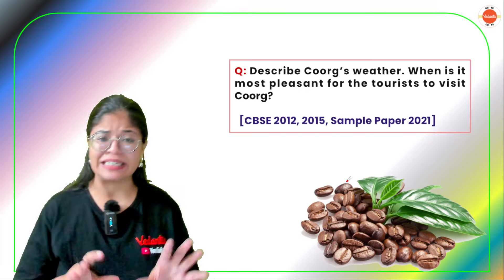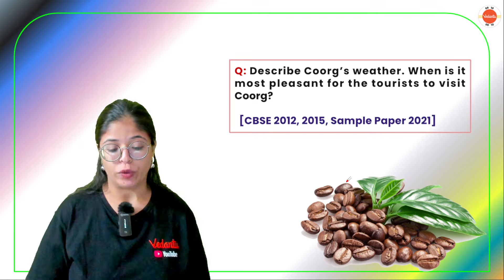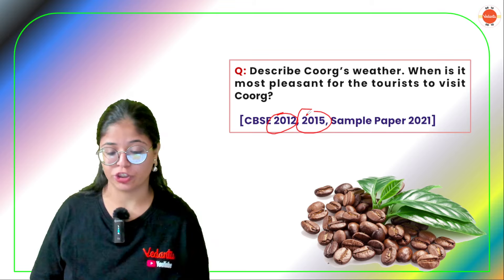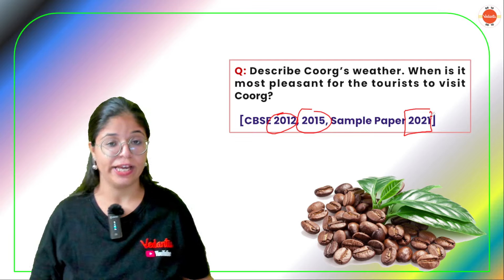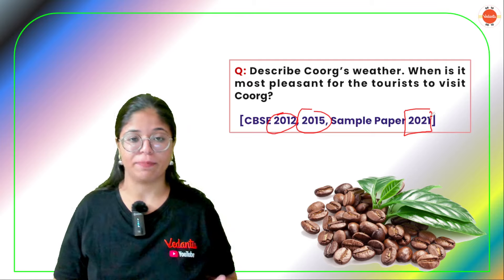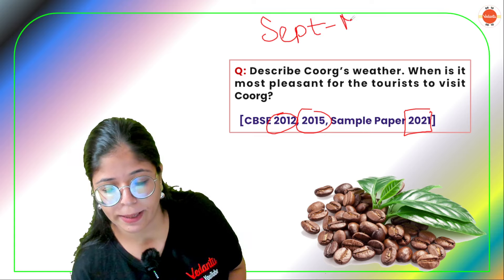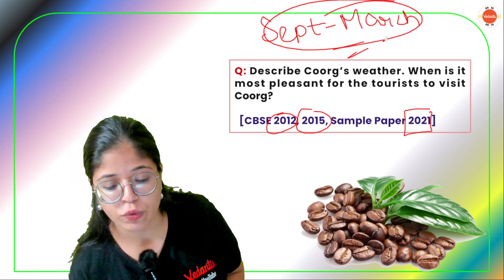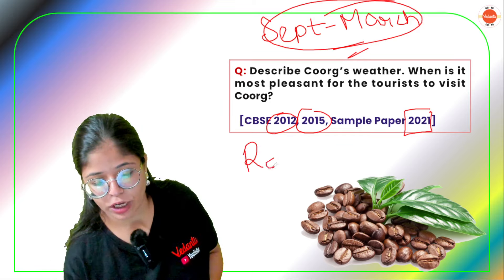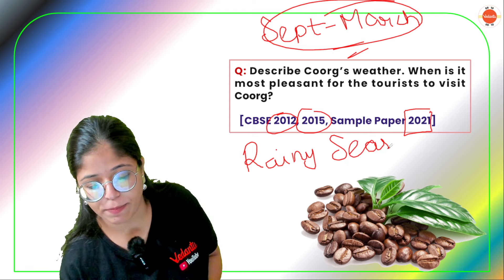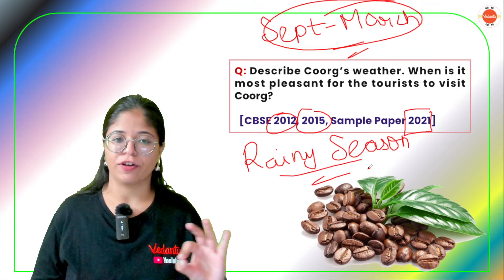Moving on to question number two: 'Describe Coorg's weather — when is it most pleasant for tourists to visit Coorg?' This was asked in CBSE 2012, 2015, and in Sample Paper 2021, making it absolutely very important. The most favourable months to visit Coorg are September to March, when the summer is pleasant and there are few showers. In the rainy season, there is a lot of rain, so a visit should be avoided then. Otherwise, the weather is absolutely pleasant and perfect for a visit.